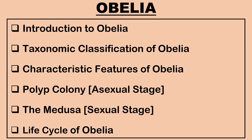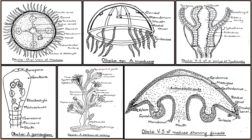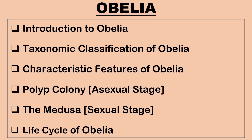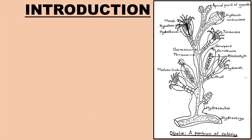In today's video, we shall learn in detail about Obelia. By the end of this video, you will have a clear understanding about the characteristic features of Obelia, its life cycle consisting of the polyp colony representing the asexual stage and the medusa representing the sexual stage. Let us begin with the introduction to Obelia.